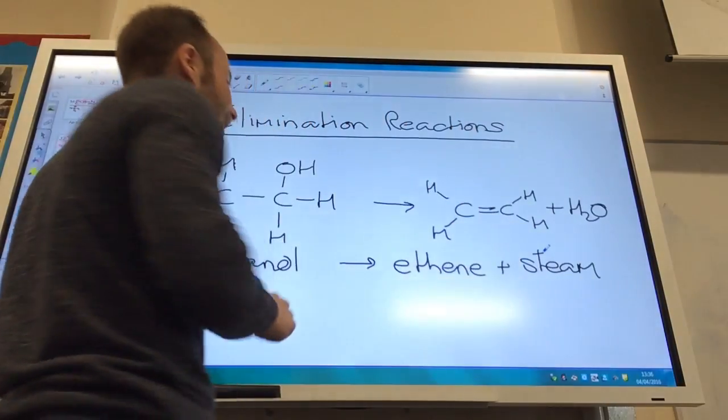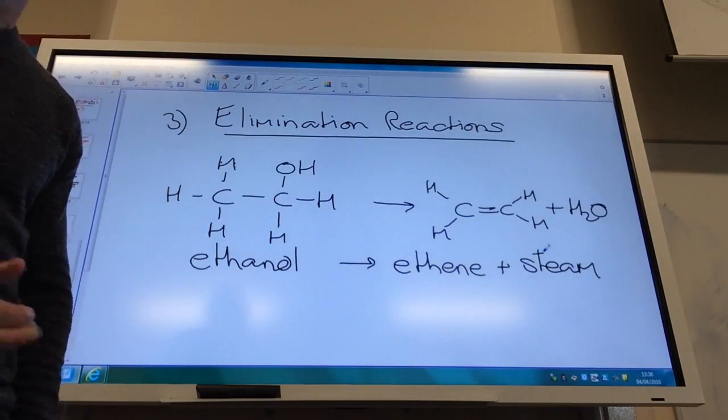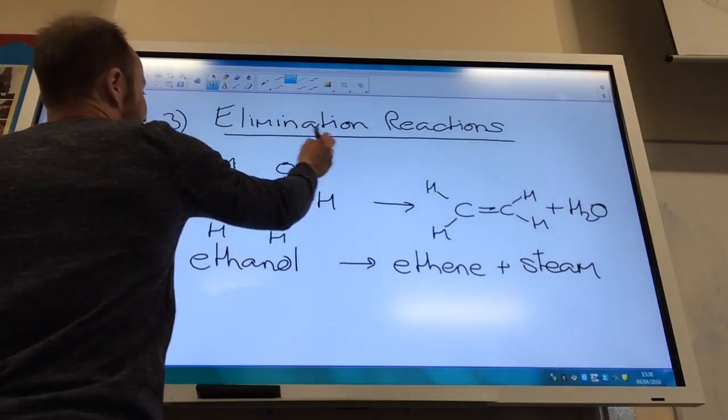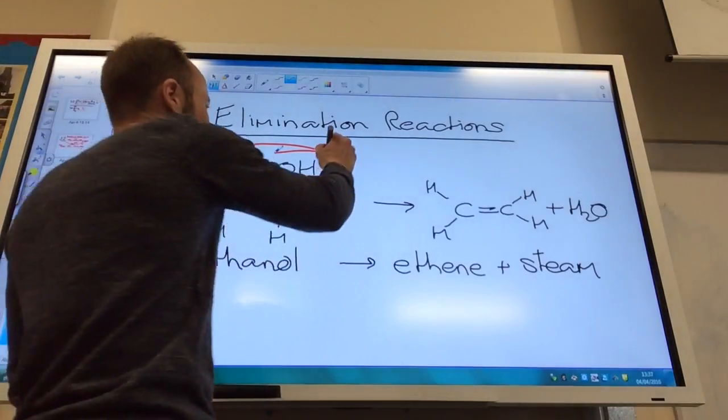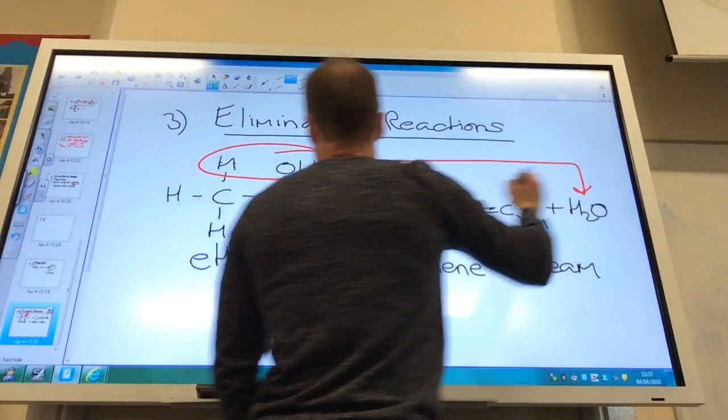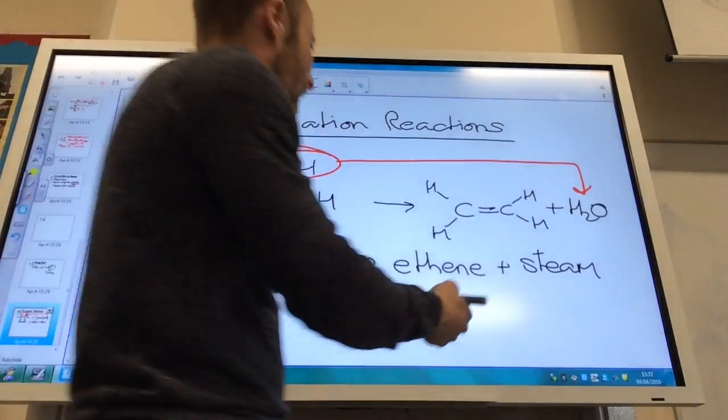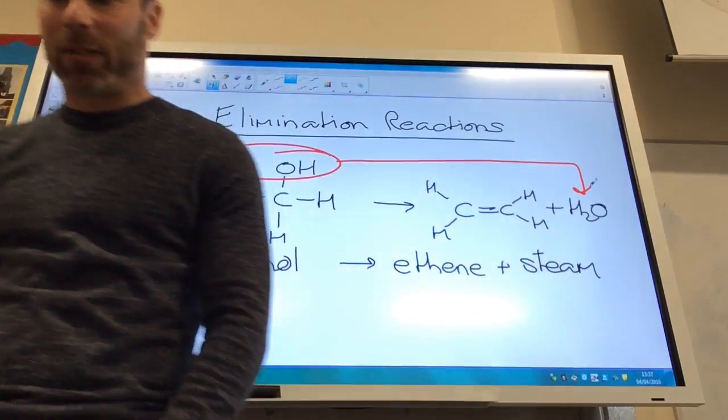So it's just a reverse of that equation and again we need an acid catalyst. It's an elimination reaction because I am eliminating a small water molecule. So the hydrogen goes, the OH goes to give me water or steam in this case and I make the double bond between the two carbon atoms.